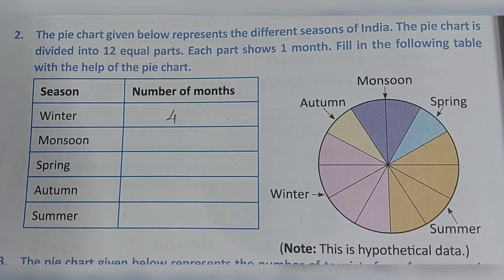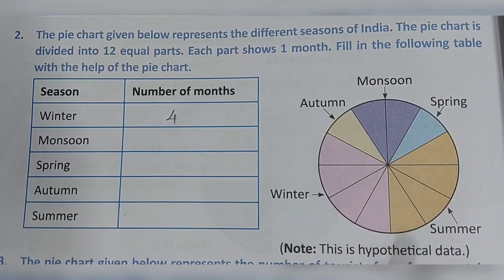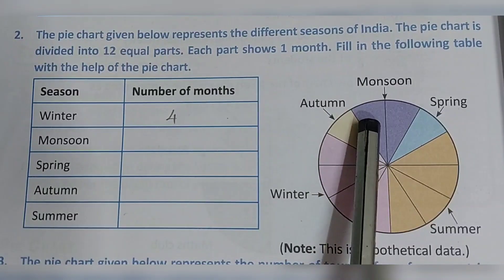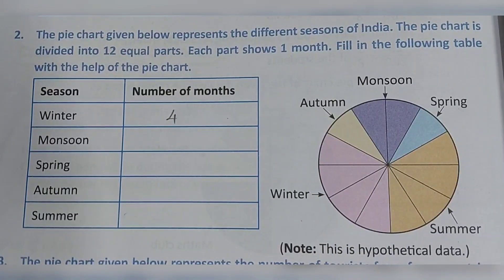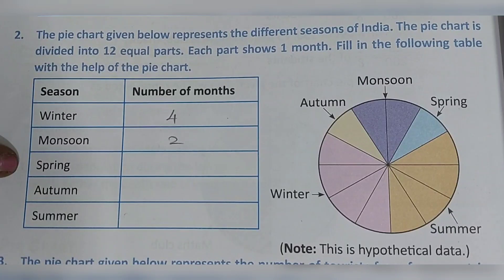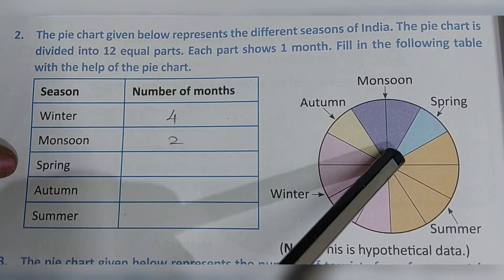Monsoon is represented in purple color. How many months? One, two — so we write two for monsoon. Next, spring is given in blue color — only one month, so we write one.